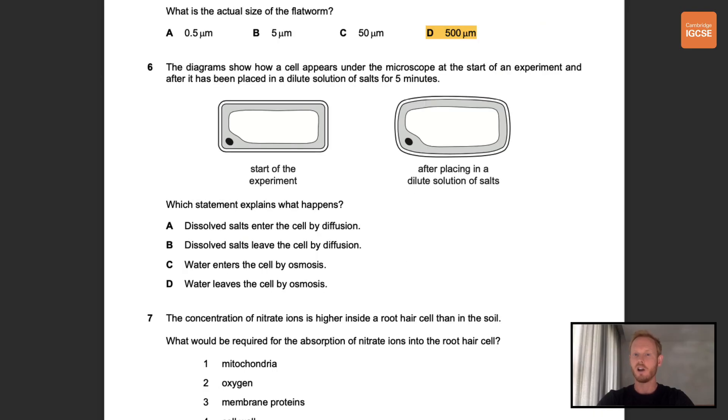Number six. The diagrams show how a cell appears under the microscope at the start of an experiment and after it's been placed in a dilute solution of salts for five minutes. Which statement explains what happens? So the cell on the right is a turgid cell. The vacuole is pushing outwards against the cytoplasm and cell wall. This means that water has entered the cell, and as we know, water moves into and out of cells by osmosis. So the answer we're looking for here is C.